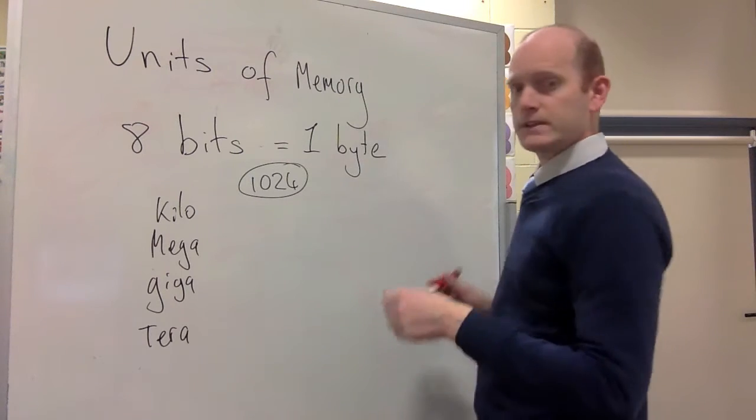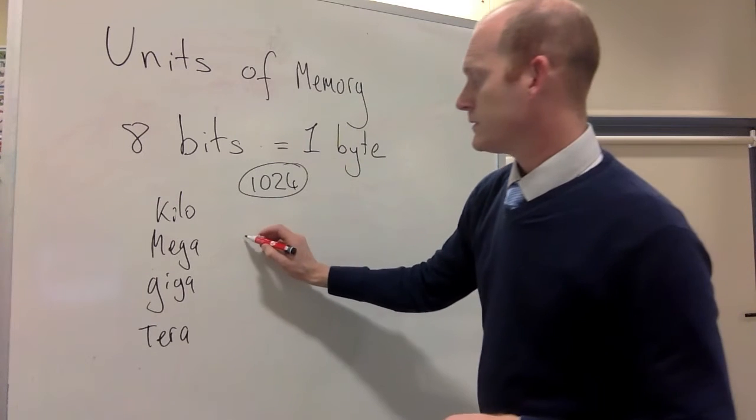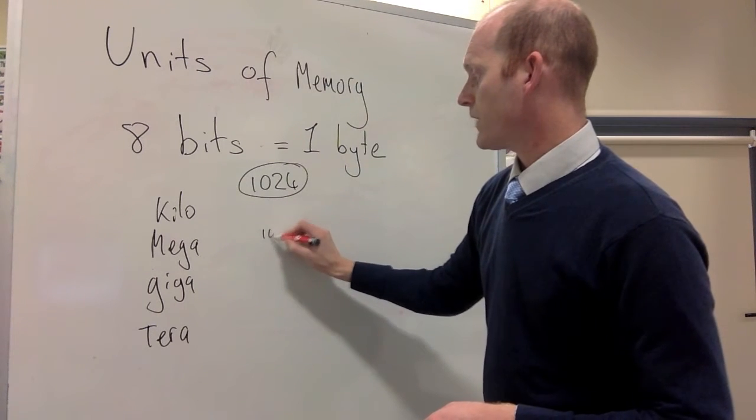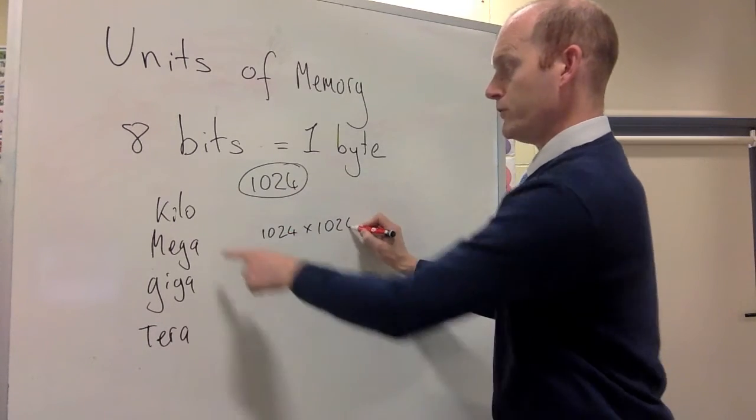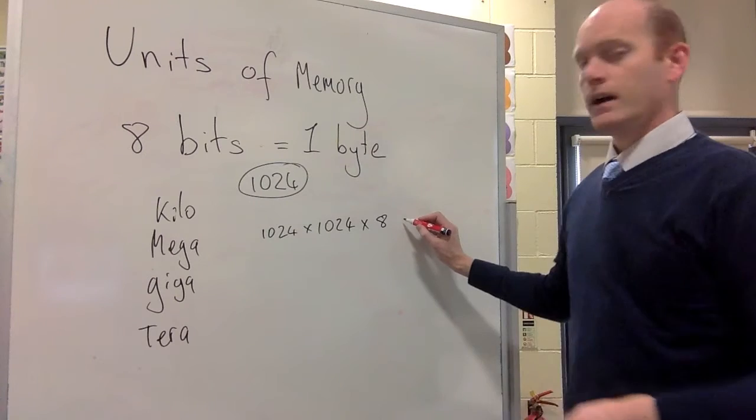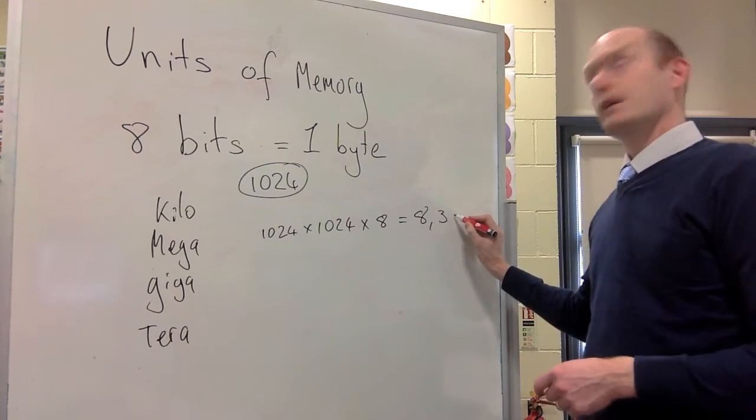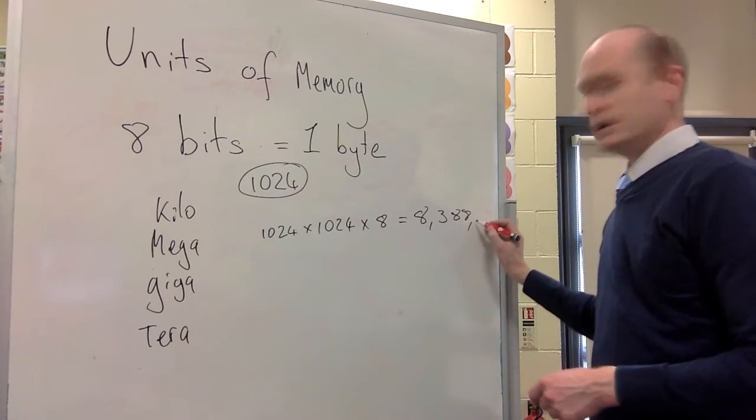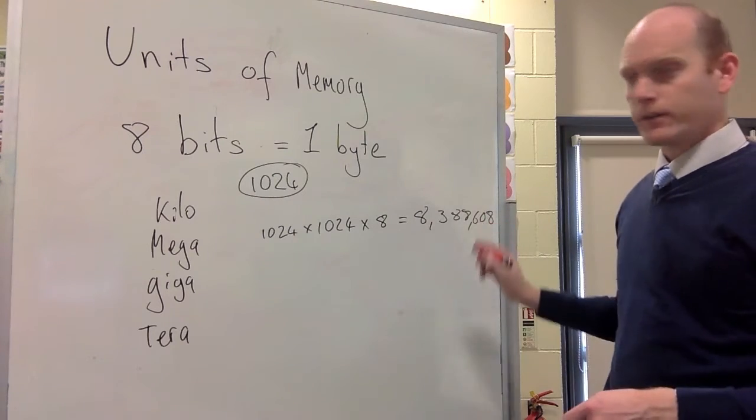So for example, let's do a megabyte is either 1,024 times 1,024 for the kilobytes, times by the eight for the byte, and that will give us a number in the region of 8,388,608. So we get that rather large number.